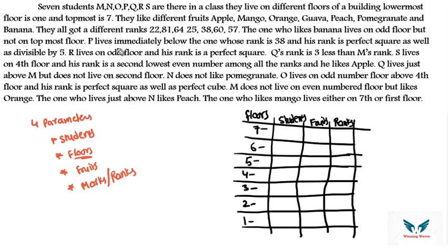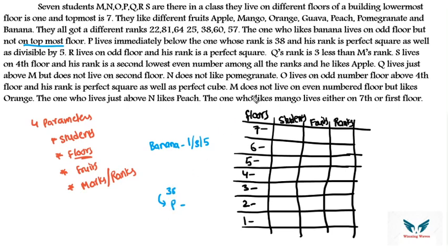P likes banana and lives on an odd floor but not on the topmost floor. Odd floors are 1, 3, 5 — seven is the topmost so we ignore it. P lives immediately below the person whose rank is 38. P's rank is a perfect square as well as divisible by 5.